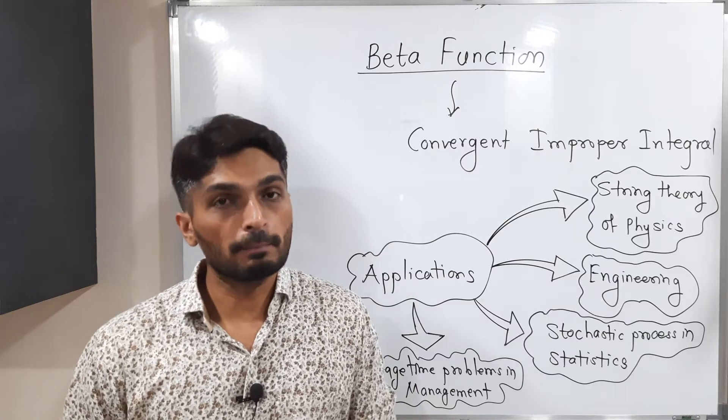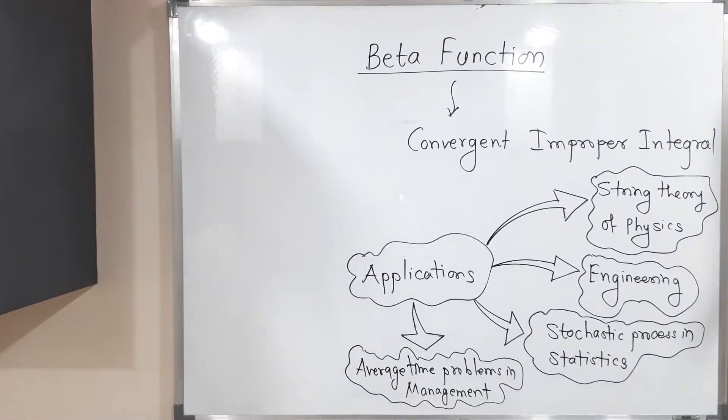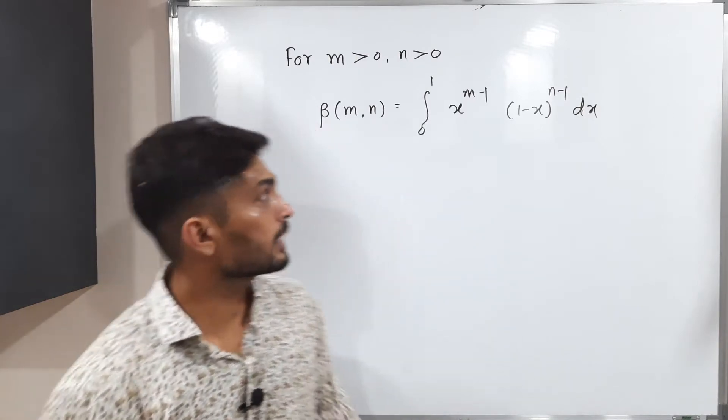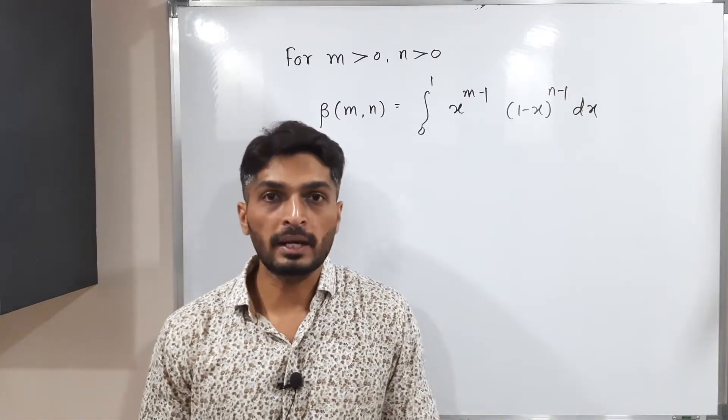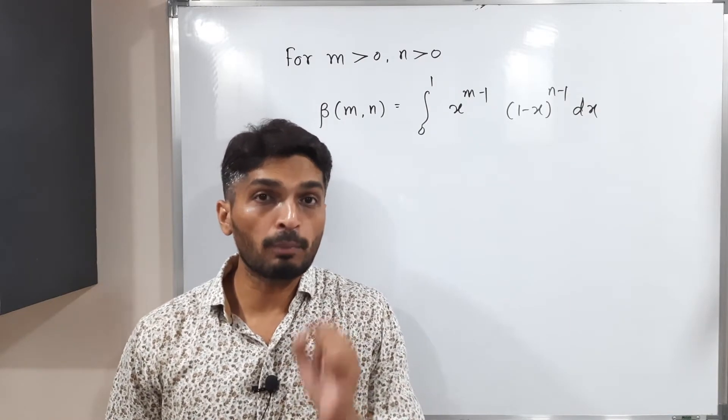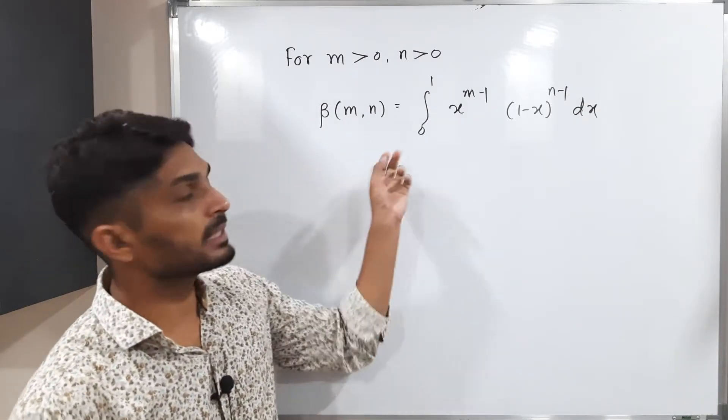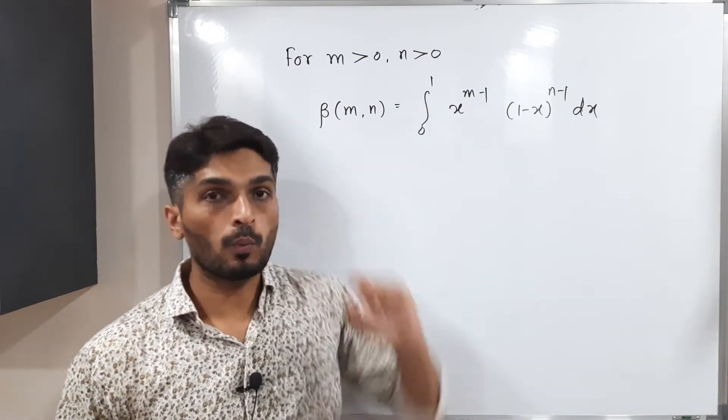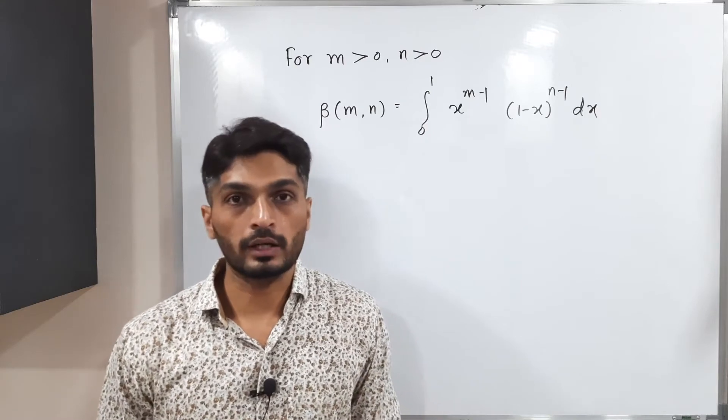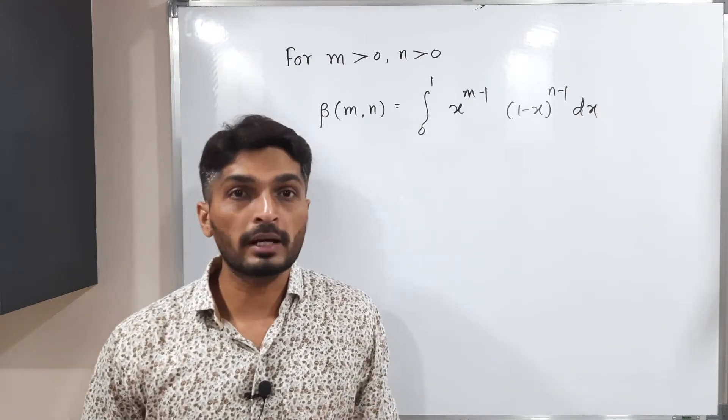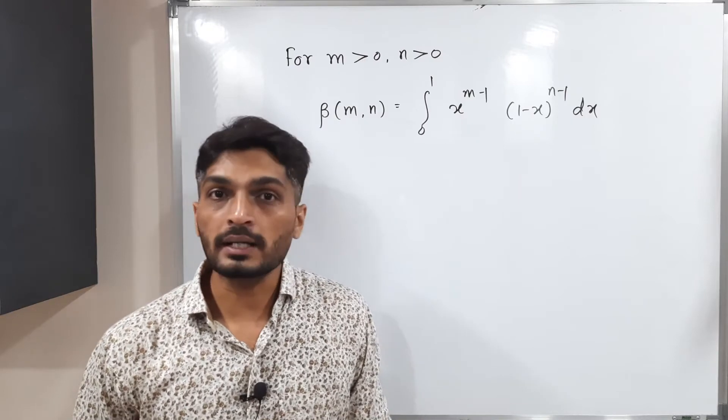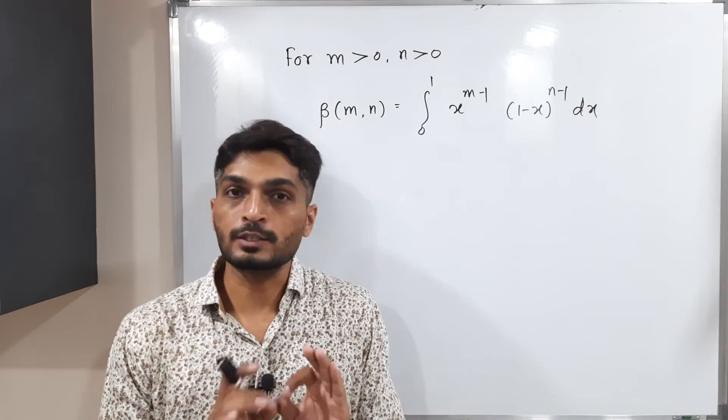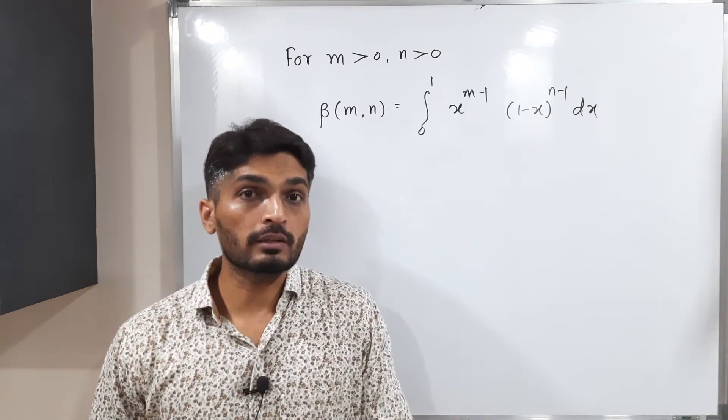This is the definition of beta function. Beta with two parameters m and n - both should be positive real numbers. The definition is simply an integration with fixed limits 0 to 1. Its format is also fixed: x raised to m minus 1 times 1 minus x raised to n minus 1 dx. This is the definition of beta function.